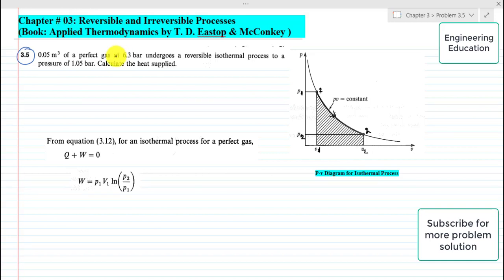Statement of the problem is: 0.05 cubic meter of a perfect gas at 6.3 bar undergoes a reversible isothermal process to a pressure of 1.05 bar. Calculate the heat supplied. First of all, we will write the given data.